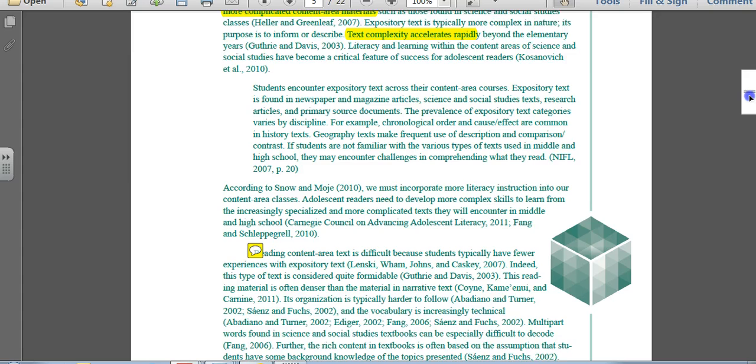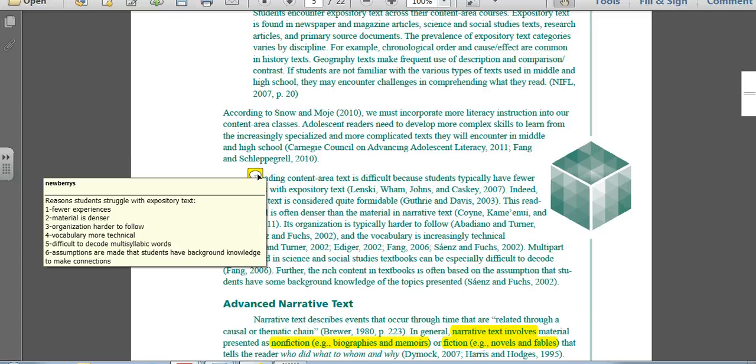Over here I made a few notes about reasons students struggle with expository text. One, they've had fewer experiences with it. The material is often denser. Organization is hard to follow. Vocabulary is very technical. Difficult to decode the multisyllabic words. And then when we have assumptions that are made, or the textbooks have assumptions that are made, that the students already have that background knowledge to make the connections they need to build their comprehension.